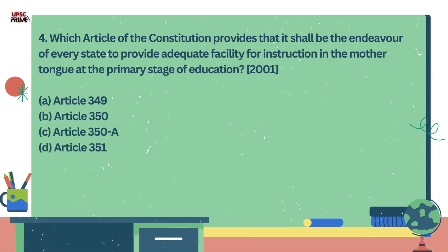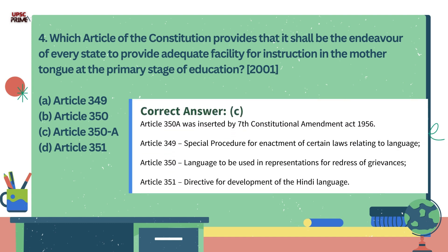Question number 4. Which article of the Indian Constitution provides that it shall be the endeavour of every state to provide adequate facility for instruction in the mother tongue at the primary stage of education? Options: Article 349, Article 350, Article 350A, and Article 351. The correct answer is Article 350A, which was inserted by the 7th Constitutional Amendment Act 1956. Article 349 talks about special procedure for enactment of certain laws relating to language. Article 350 talks about language to be used in representation for redress of grievances. Article 351 talks about directive for the development of Hindi language.